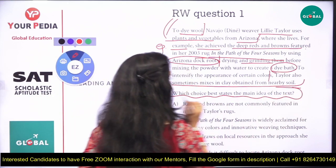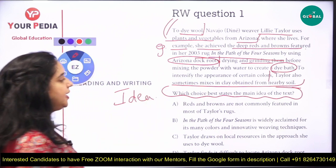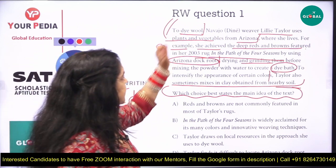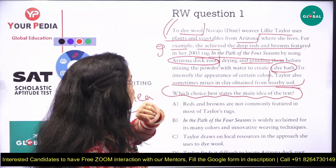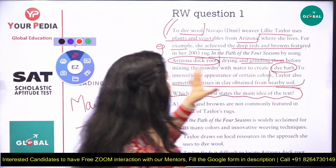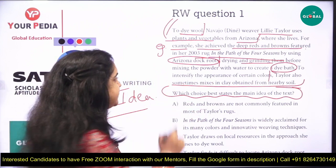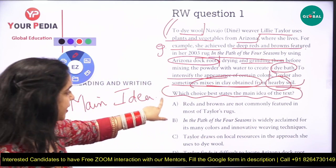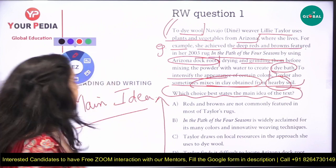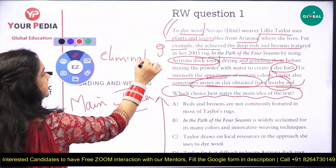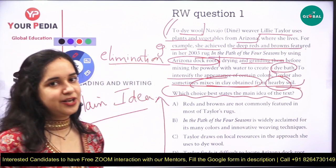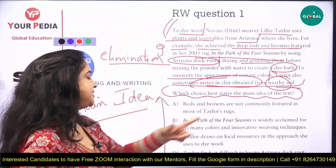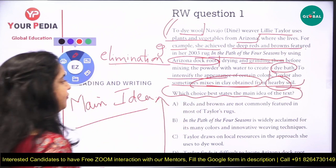To intensify the appearance of certain colors, Taylor sometimes also mixes in clay obtained from nearby soil. You are asked: which choice best states the main idea of the text? From reading the passage, we understand it is about dyeing wool using local resources, achieving deep reds and browns from Arizona dock roots by grinding, mixing, and preparing a dye bath, then adding clay to intensify color.